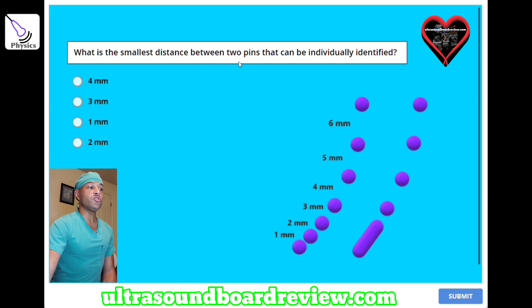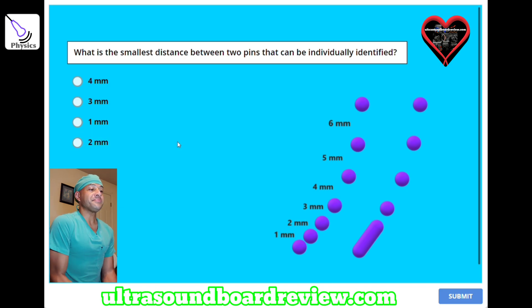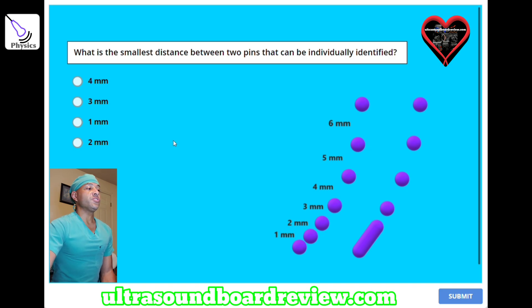What is the smallest distance between two pins that can be individually identified? A, 4 millimeters; B, 3 millimeters; C, 1 millimeter; or D, 2 millimeters. The answer is B, 3 millimeters.